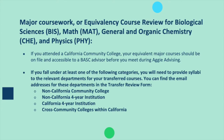Now let's consider major coursework or equivalency course review for biological sciences, math, general and organic chemistry, as well as physics. If you attended a California community college, your equivalent major courses should be on file and accessible to a BASC advisor before you meet during Aggie Advising. If you fall under at least one of the following categories, you'll need to provide syllabi to the relevant departments for your transferred courses: non-California community college, non-California four-year institution, California four-year institution, or cross-community colleges within California. You can find the email addresses for the departments in the transfer review form.